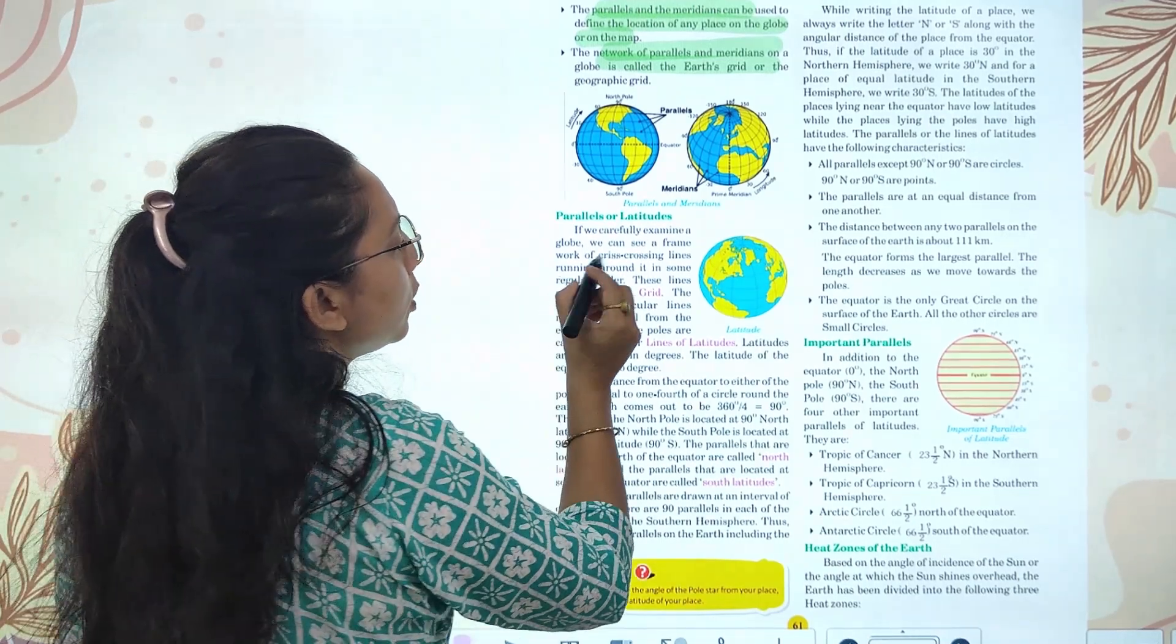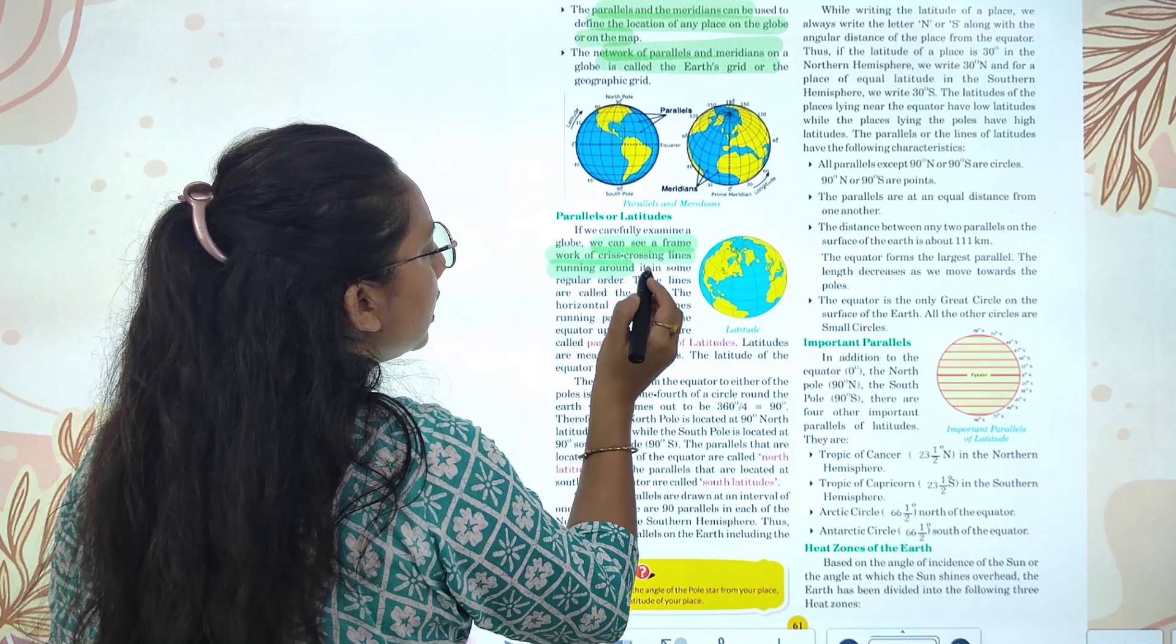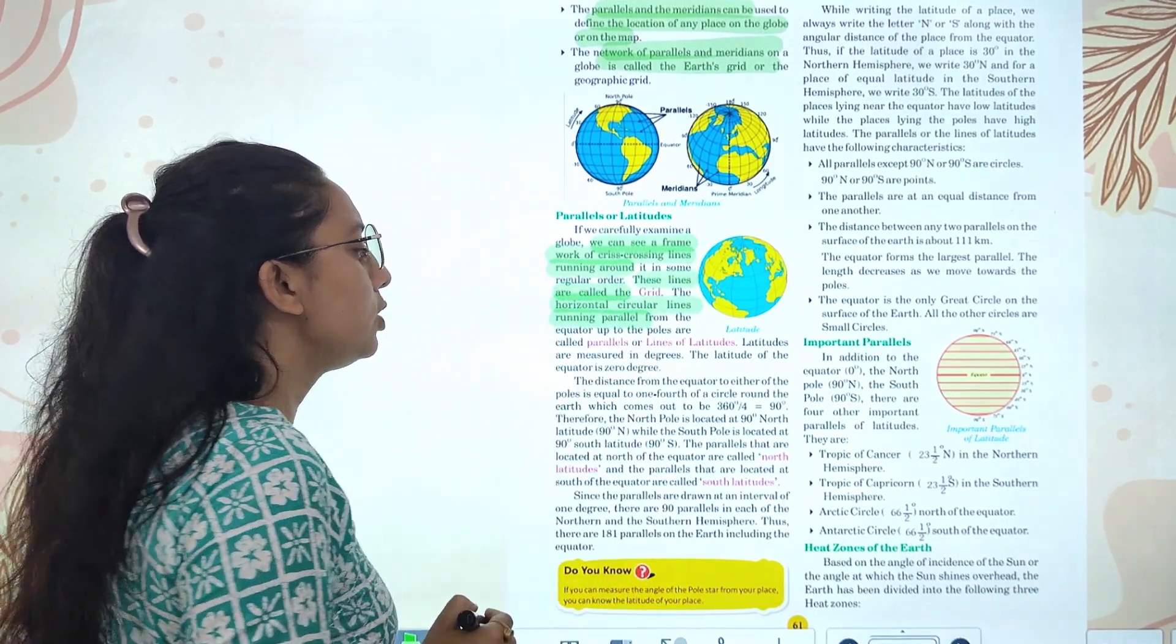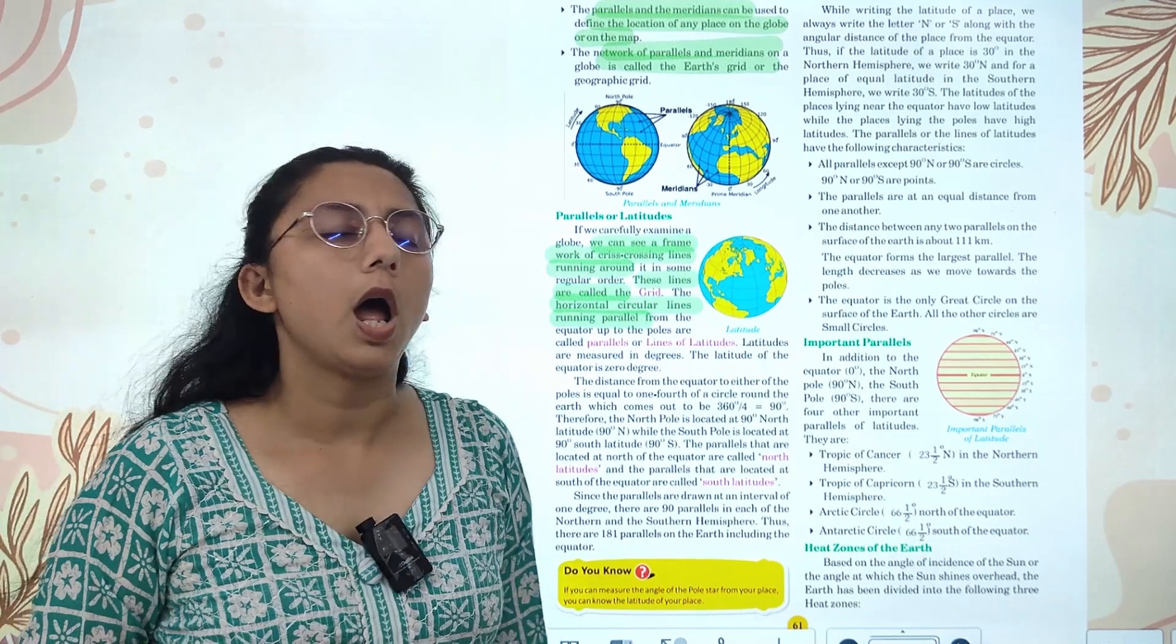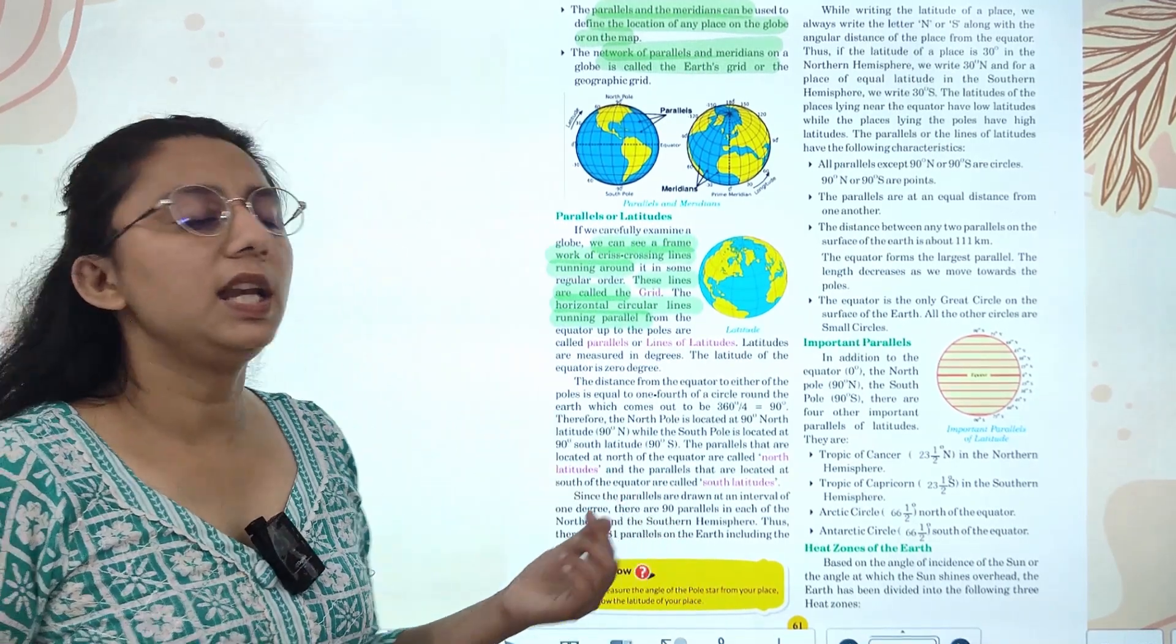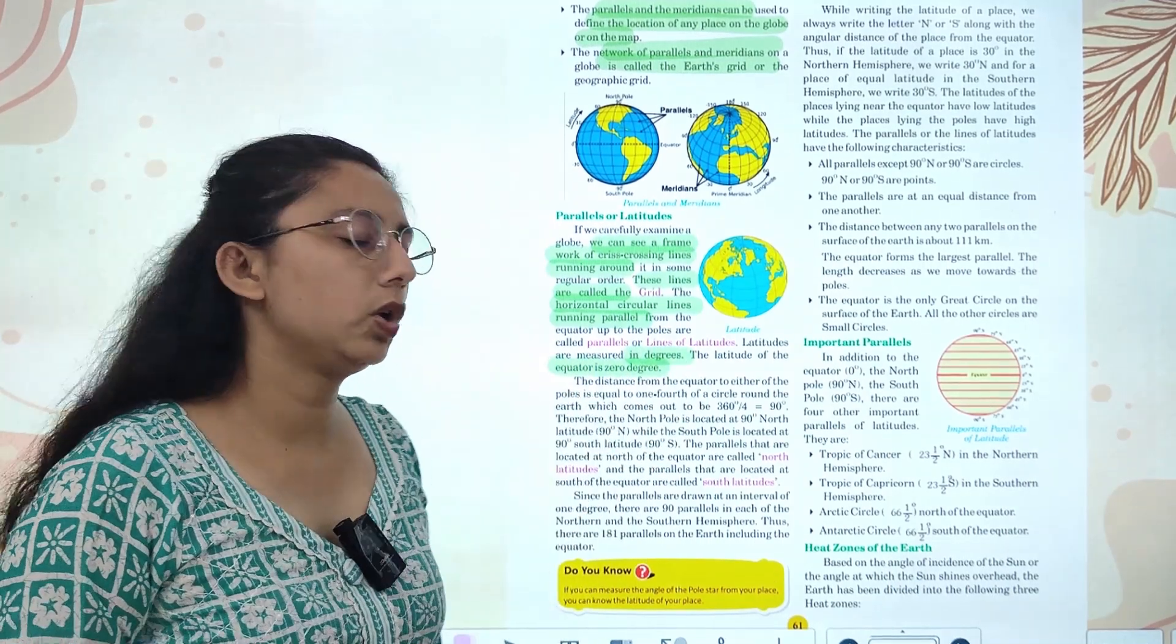Now parallels and latitudes. We can see the framework of lines crossing, forming a grid. The horizontal circular lines are parallels from the equator. We can see many parallels and lines of meridians with degree measures. The latitude of the equator is zero degrees.